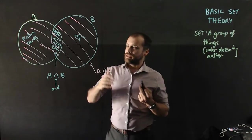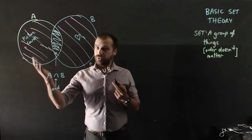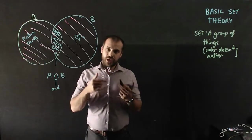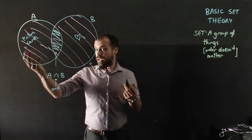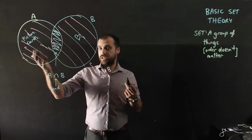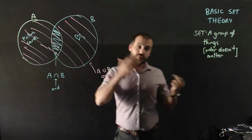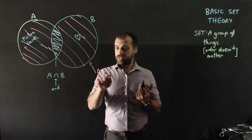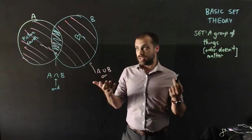A or B is going to be all of the hearts and all of the picture cards. So included in A or B is the King of Spades. Yeah, it's not a heart, but it doesn't need to be. It just needs to be a picture card. Conversely, something like the Five of Hearts would be included in A union B as well.